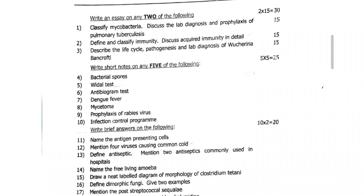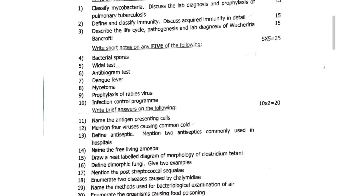Next, write short notes on any five of the following: bacterial spores, Widal test, antibiogram test, dengue fever, mycetoma, prophylaxis of rabies virus, infection control program.